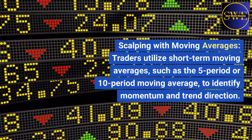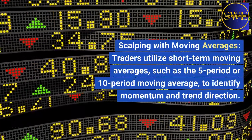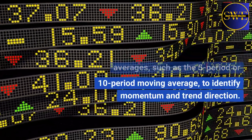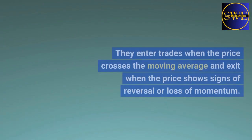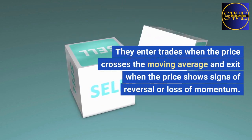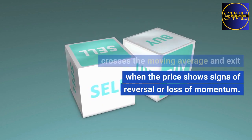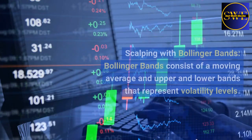Scalping with moving averages: traders utilize short-term moving averages such as the 5-period or 10-period moving average to identify momentum and trend direction. They enter trades when the price crosses the moving average and exit when the price shows signs of reversal or loss of momentum.